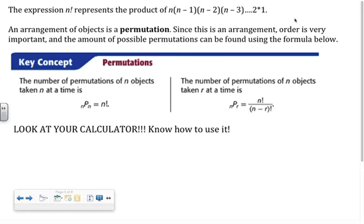In the last example we multiplied 5 × 4 × 3 × 2 × 1, which we represent as 5 factorial. Factorials are very important when calculating permutations or combinations. An arrangement of objects is a permutation — since order matters. The number of possible permutations can be found using the permutation formula, and most scientific calculators have an nPr function to calculate this directly.